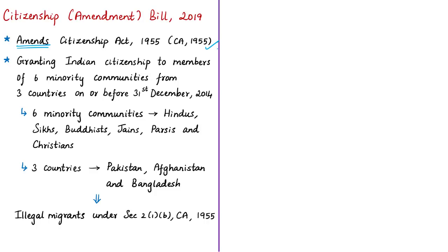The basic objective of the Citizenship Amendment Bill of 2019 is to facilitate granting of Indian citizenship to members of six minority communities who migrated to India from three countries — Pakistan, Afghanistan, and Bangladesh — before 31st December 2014. The six minority communities mentioned in the amendment bill are Hindus, Sikhs, Buddhists, Jains, Parsis, and Christians.